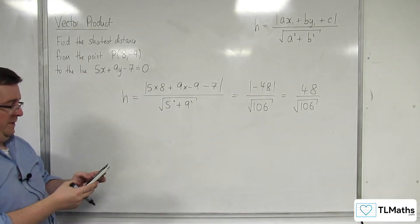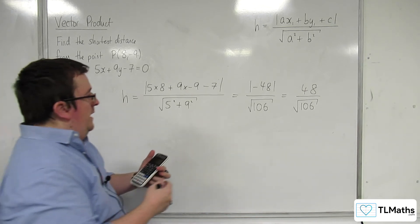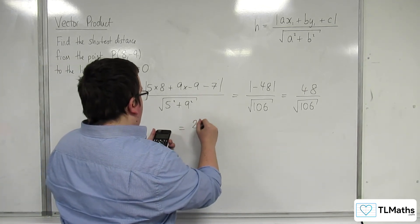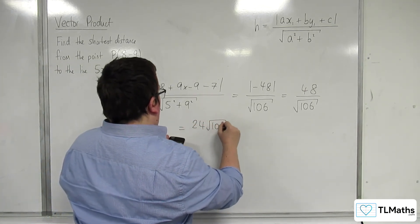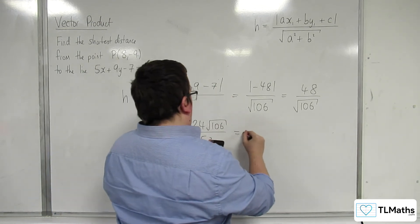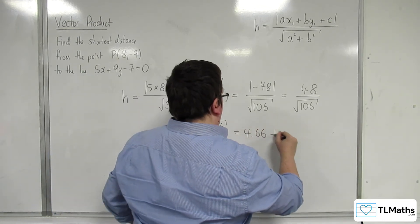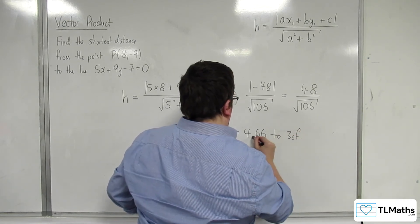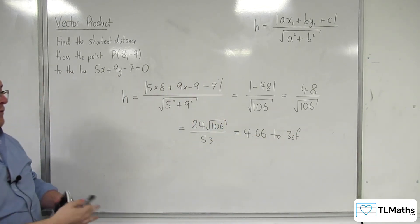So 48 divided by the square root of 106 is an exact value of 24 root 106 over 53, which is 4.66 to 3 significant figures.